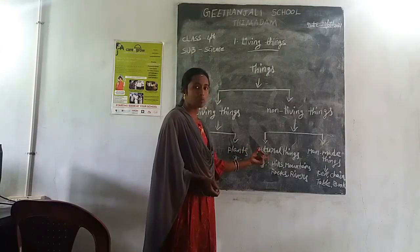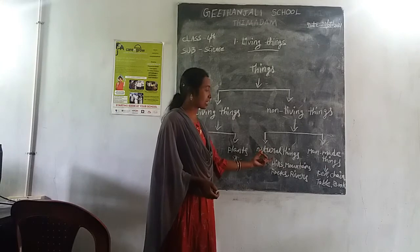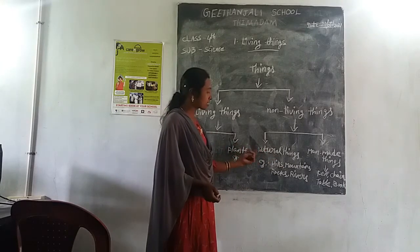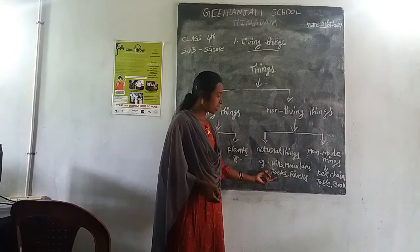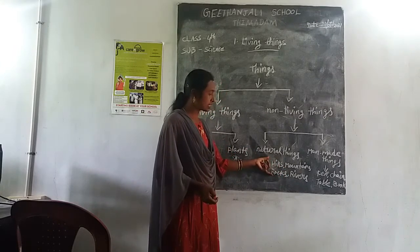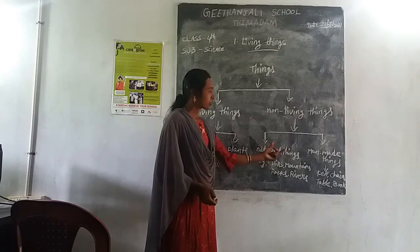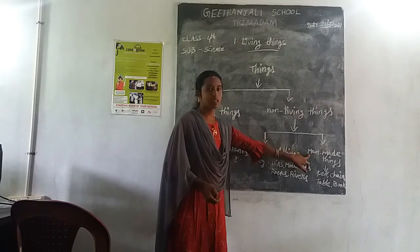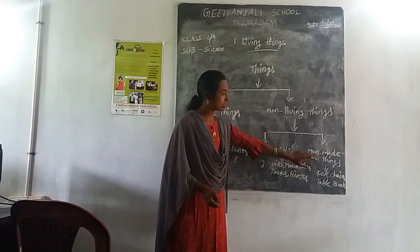Natural things: some things are provided by nature — that type of things are called natural things. Examples: hills, mountains, rocks, rivers — these things are provided by nature. Next, man-made things: some things are made by man, by human beings.